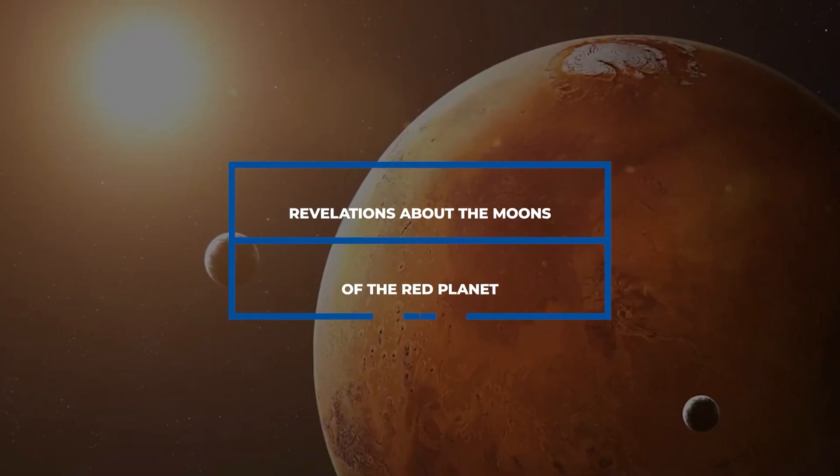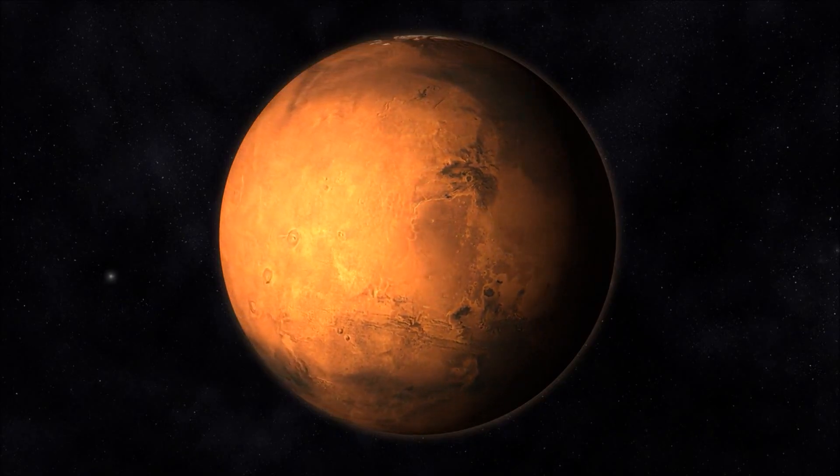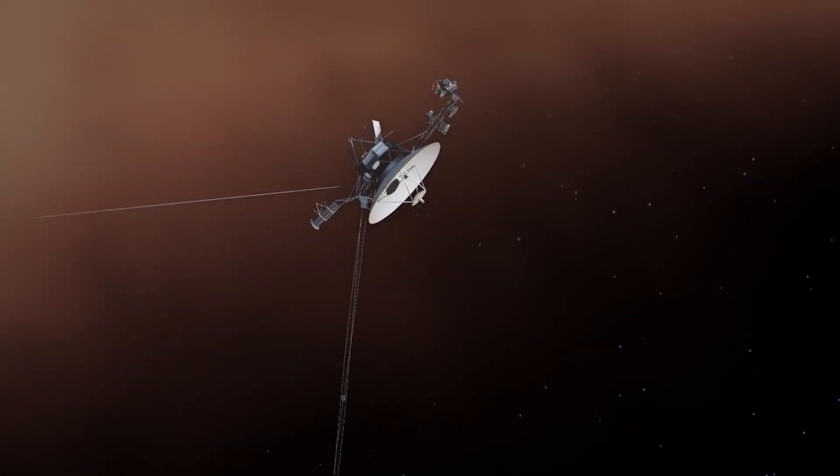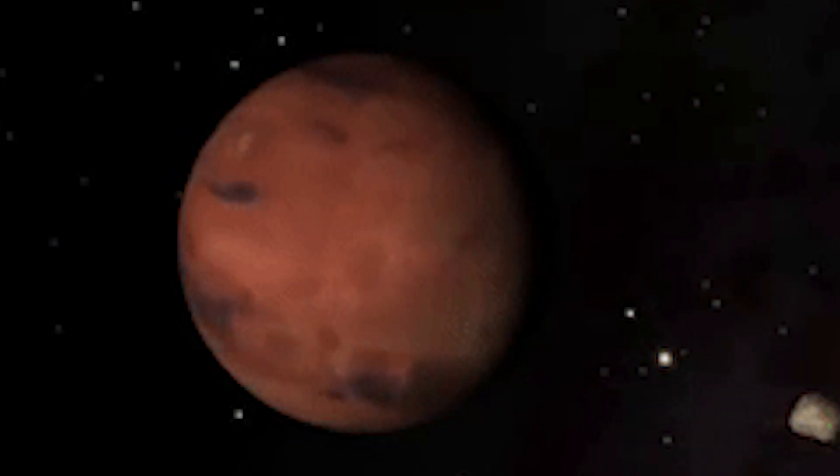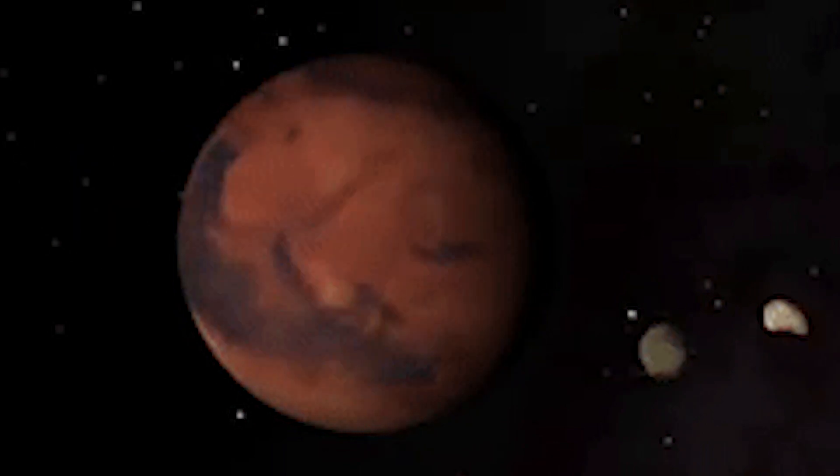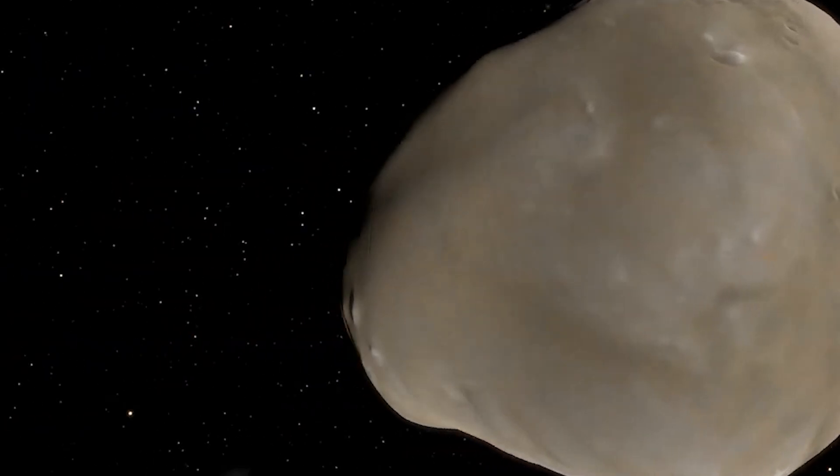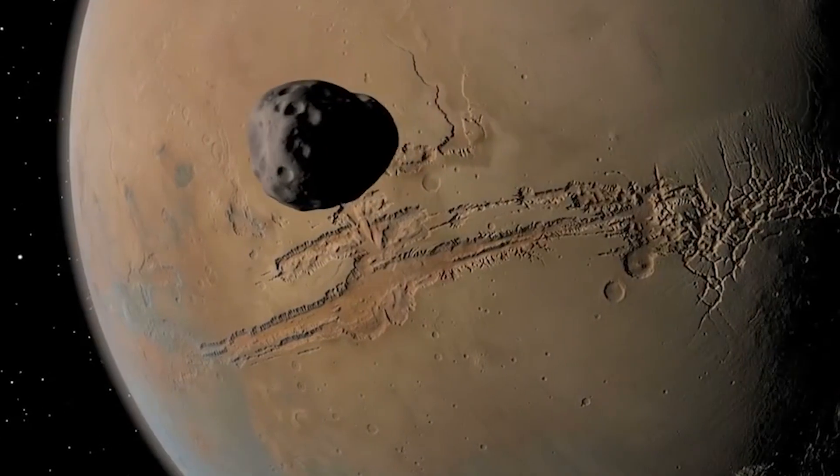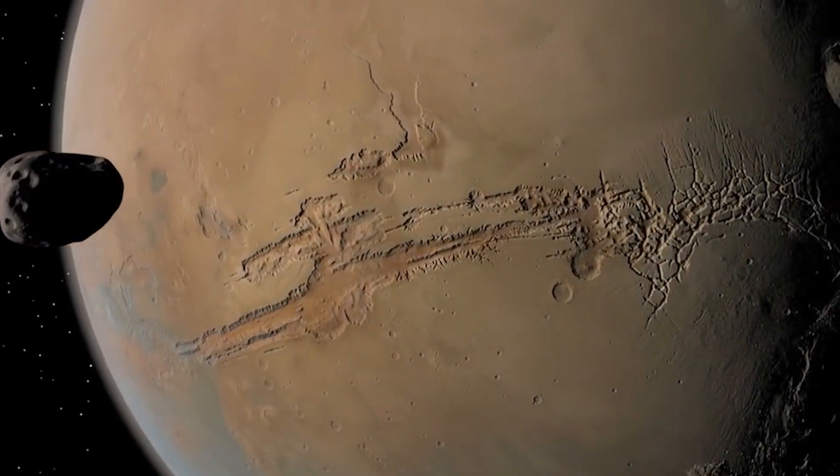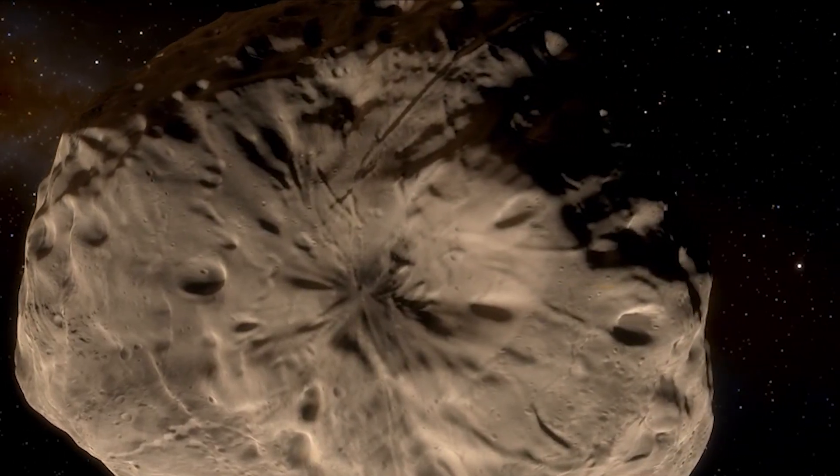Number two, revelations about the moons of the red planet. The exploration of the Martian system by the Voyager spacecraft yielded a wealth of surprising discoveries concerning the two diminutive moons orbiting the red planet, Phobos and Deimos. Often overshadowed by Mars itself, these moons unveiled intriguing characteristics that sparked inquiries into their origins and evolution.